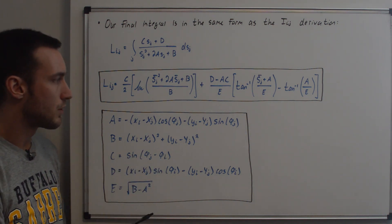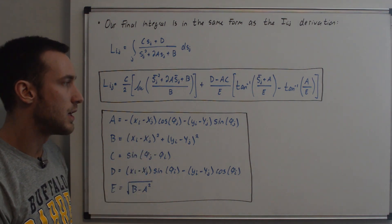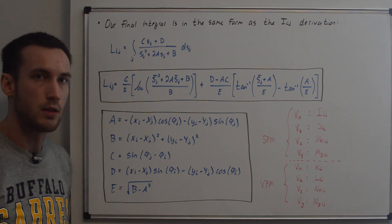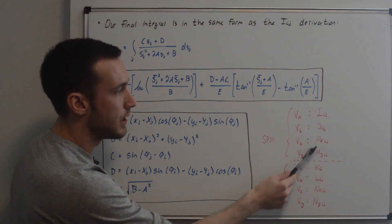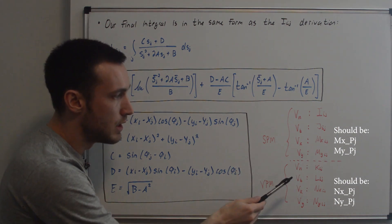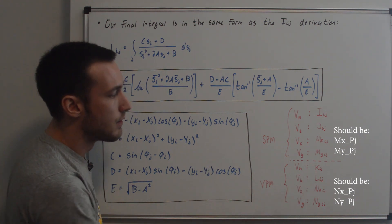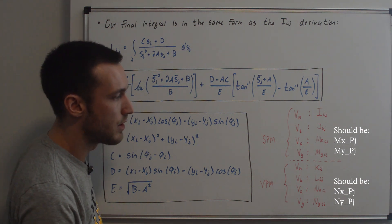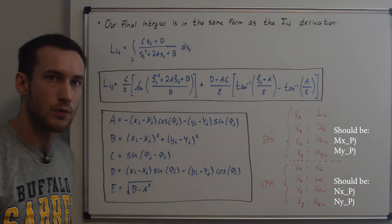Make sure you have your ij indices and phi_i and phi_j indices correct. We just need one more video before getting into vortex panel method coding and results. We've covered I_ij, J_ij, M_x and M_y_ij for the source panel method, K_ij in the previous video, and L_ij in this video. The last video will be the streamline derivation for the vortex panel method, covering N_x_ij and N_y_ij. Thanks for watching.